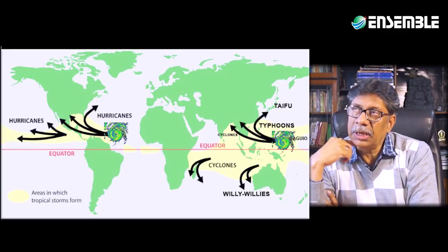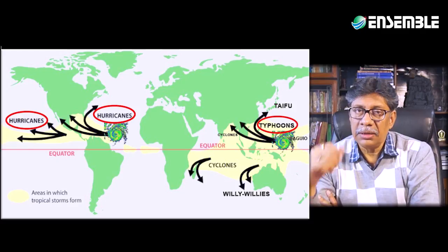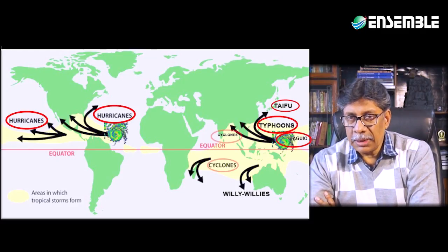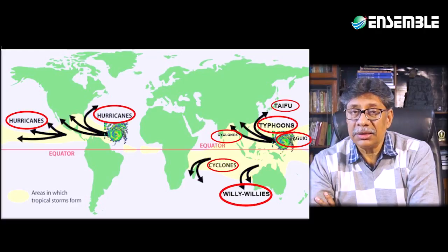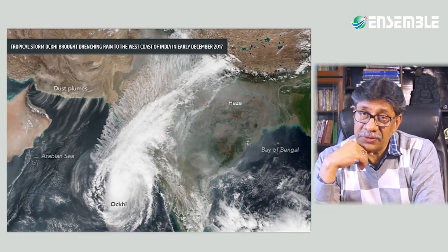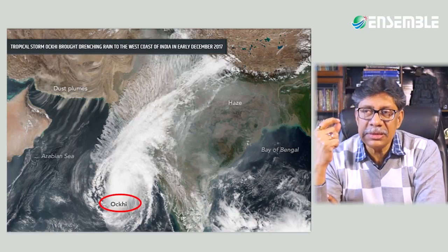Tropical cyclones are given different names in different regions. They are called hurricanes in the Caribbean Sea, typhoons in the China Sea and Japan, Bagu in the Philippines, cyclones in the Indian Ocean, and willy-willies in Australia. Tropical cyclones are named to provide ease of communication between forecasters and the general public. For example, the cyclone that affected India in October 2017 was named Okhi, a name given by Bangladesh meaning 'eye'.